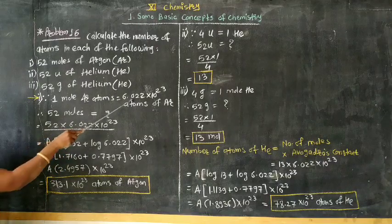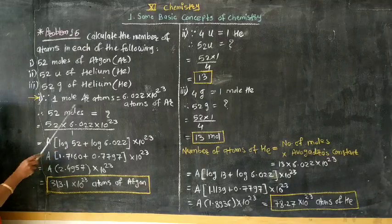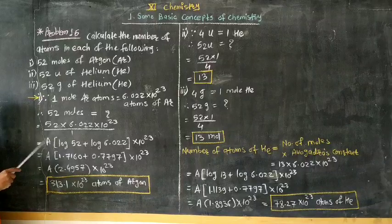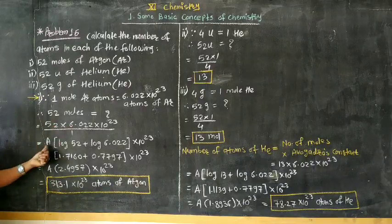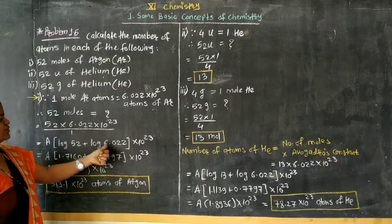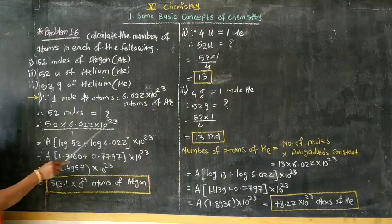Just by doing cross multiplication, we get value is equal to 52 into 6.022 into 10 raise to 23 divided by 1, which is equal to... Solve this calculation with the help of log book. Antilog of log of 52 plus log of 6.022, and 10 raise to 23 factor carry out as it is.